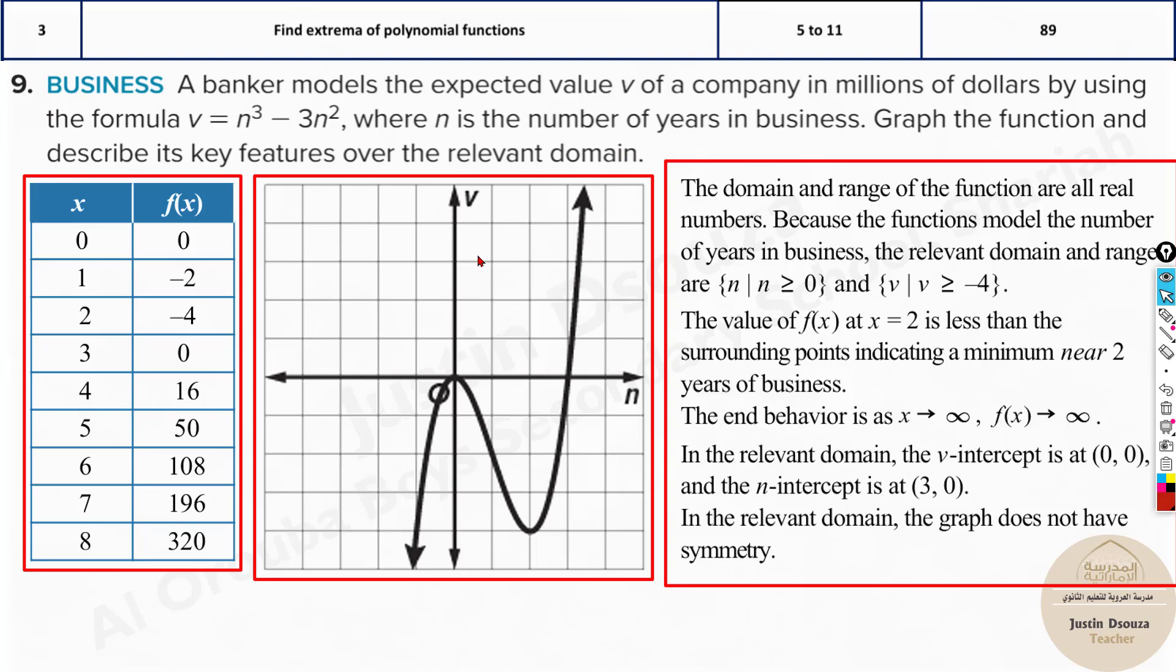Now what about the range? Now range is the lowest is minus 4. So it's all values greater than because you can't consider the left side. Now this is increasing indefinitely, it's just going up. So that means ranges from this point, that is minus 4 and more. So that's the thing.